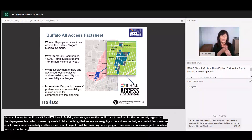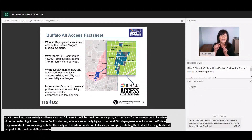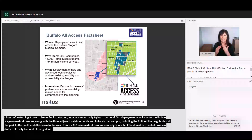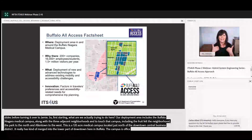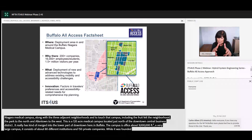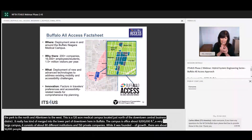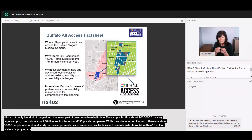Our deployment area includes the Buffalo Niagara Medical Campus, or BNMC, along with three adjacent neighborhoods that touch that campus — including the Fruit Belt neighborhood, Masten Park just to the north, and Allentown directly to the west. The BNMC is a 120-acre medical campus located just north of our downtown central business district, about 9 million square feet, and consists of about eight different member institutions and over 150 different private companies. While it was founded in the early 2000s, the last 10 years have seen real expansion of growth. There are about 16,000 people who work or study on the campus each day, and more than 1.5 million visitors for health care and other services annually, generating significant transportation demand for both visitors and employees.